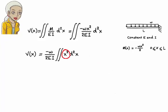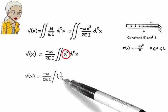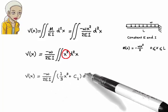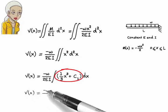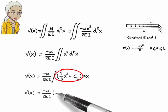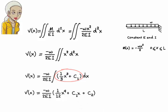Integrating x squared once, I get v(x) equals negative w over 2EI times the integral of one third x cubed plus c1.